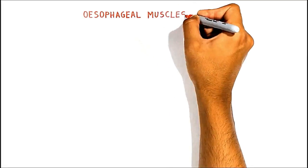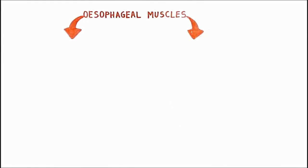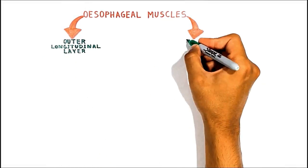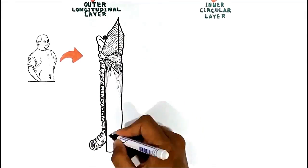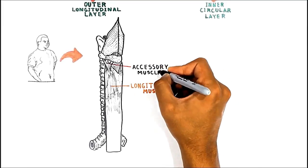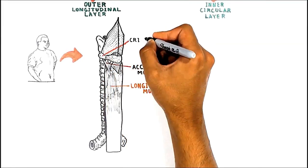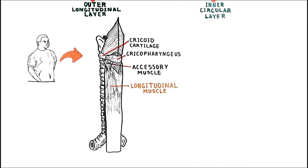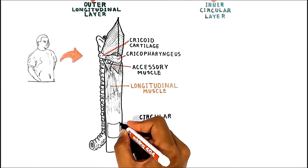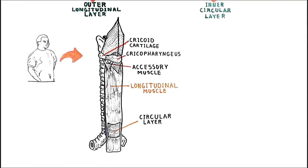The esophageal muscle is composed of two layers: the outer longitudinal and inner circular muscle layer. The longitudinal muscle receives fibers from an accessory muscle on each side originating from the posterolateral aspect of the cricoid cartilage and the contralateral deep portion of the cricopharyngeus muscle. As it descends, fibers become equally distributed and completely cover the esophagus. Notably, the inner circular muscle layer is thinner than the outer longitudinal layer — a relationship reversed in all other parts of the gastrointestinal tract.